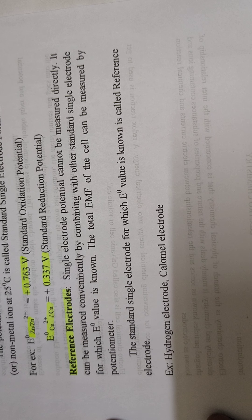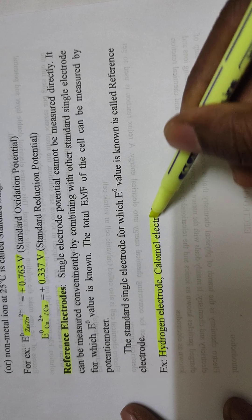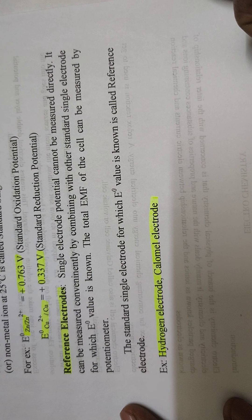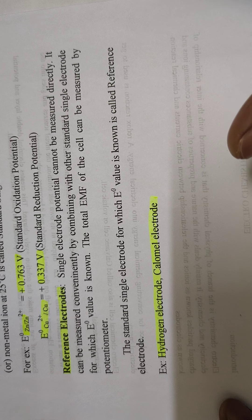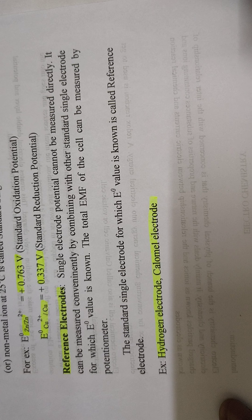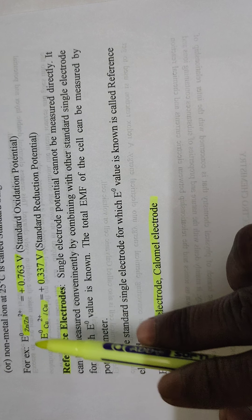Similarly, if you want to express the standard single electrode potential of copper, the copper electrode should be dipped in its own salt solution at 25 degrees centigrade, at 1 atmosphere pressure, and at 1 molar concentration. Because copper undergoes reduction, it has a reduction potential. The standard reduction potential of copper is 0.337 volts, i.e., E° (Cu²⁺/Cu) = 0.337 volts.